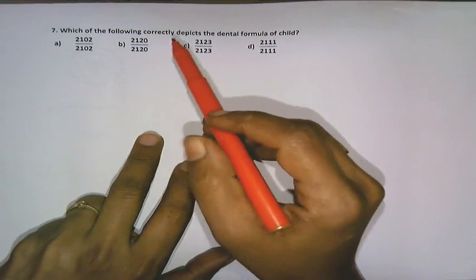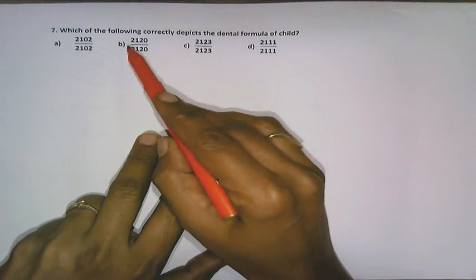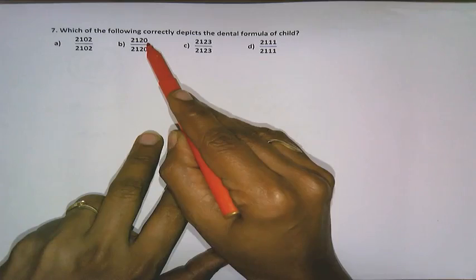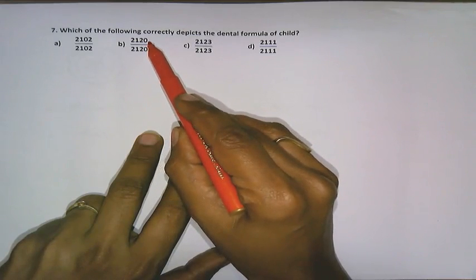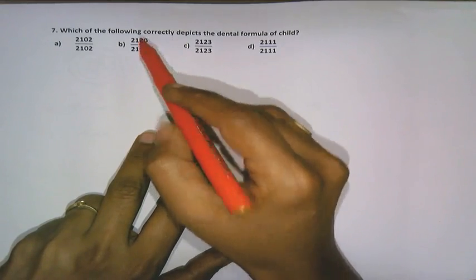Here, which of the following correctly depicts the dental formula of the child? We have to be aware students, molars are not present in the milk dentition. So in this formula which is represented this way, molars represent the last one that has 0. So we move on to option B.